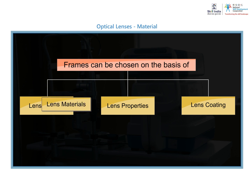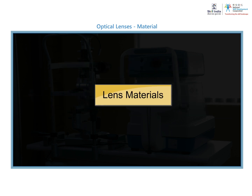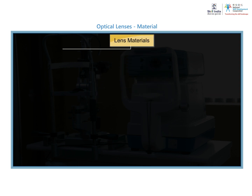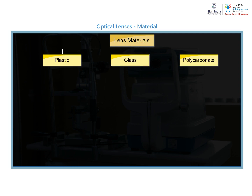First, let us look at the materials that lenses are made of. Lenses can be made from three materials: plastic, glass, or polycarbonate. Let us consider each material one at a time.